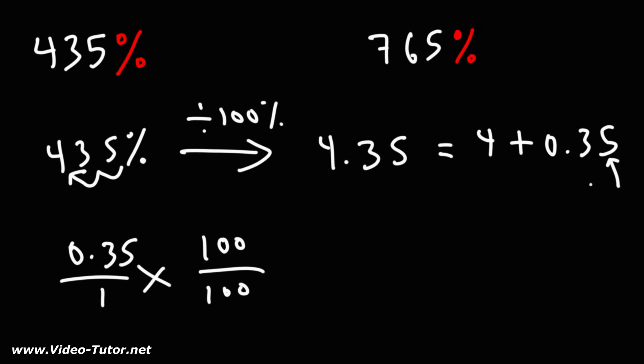The 5 goes to the 100s place. So we're going to multiply it by 100 over 100 to convert it to a fraction. 0.35 times 100 is 35. 1 times 100 is 100.